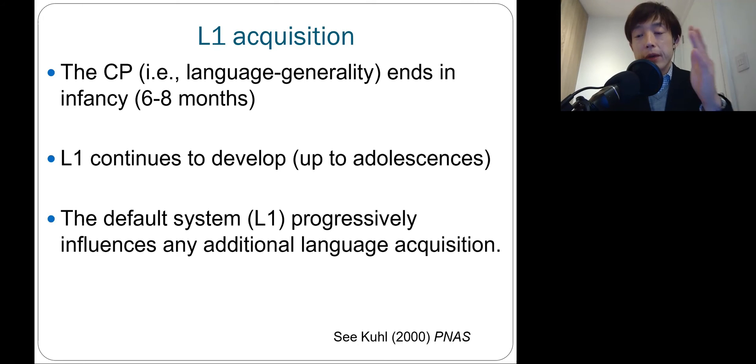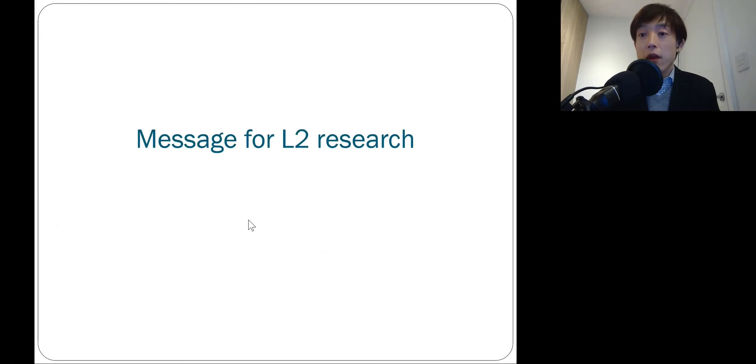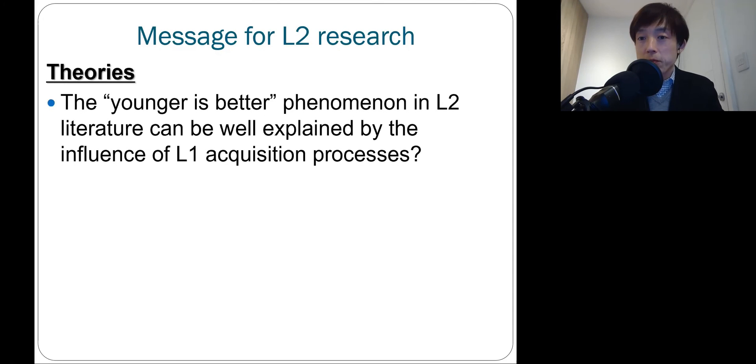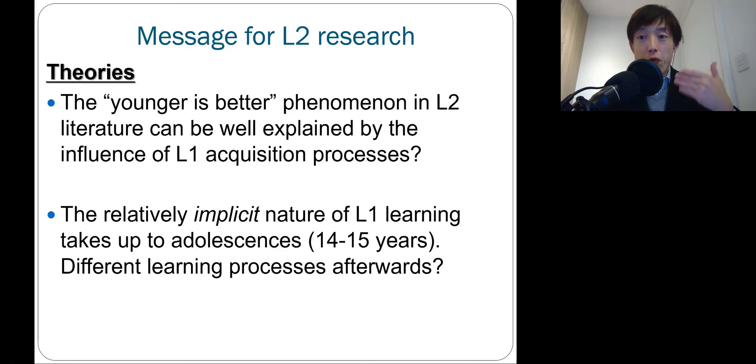Throughout this process, because your L1 is becoming stronger and stronger, this will obviously make more influence if you try to acquire any additional languages. Therefore, this has a lot of implications for second language acquisition research. First of all, this progressive influence of L1 system on any additional languages will probably explain very well why younger is better when it comes to second language acquisition. Because if you start learning second language at an earlier age, that means that your L1 is less developed, meaning that you will be subjected to less amount of L1 influence.